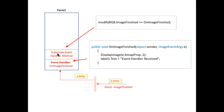The other thing it has to do is subscribe that event handler. We have to tell the event handler delegate the list of methods that need to be invoked when the event happens. We need to tell it, 'I'm here — when the event happens, call me and initiate my method so that I can display the bitmap.' So we'll talk about these two bits of code: the subscriber code and the event handler method.